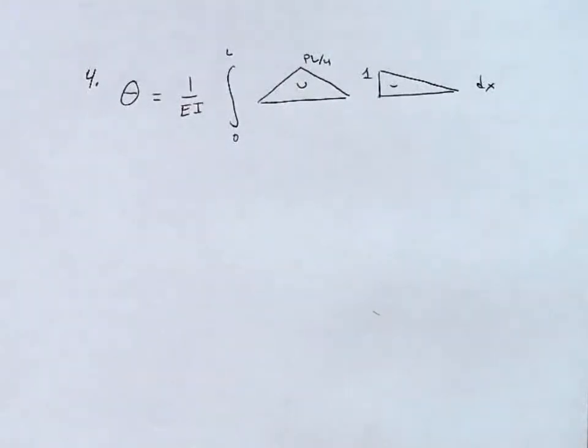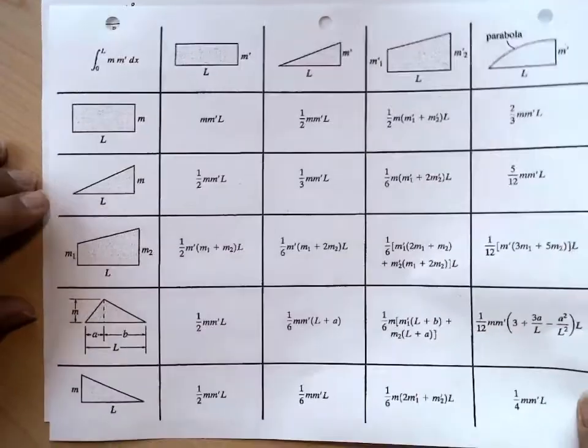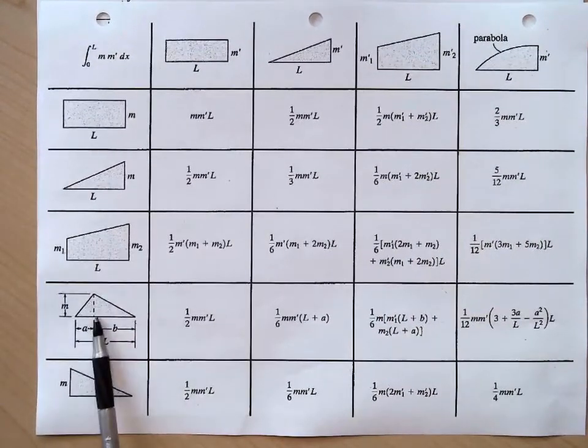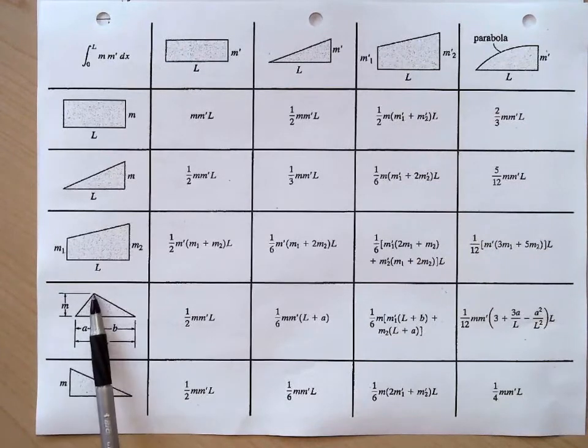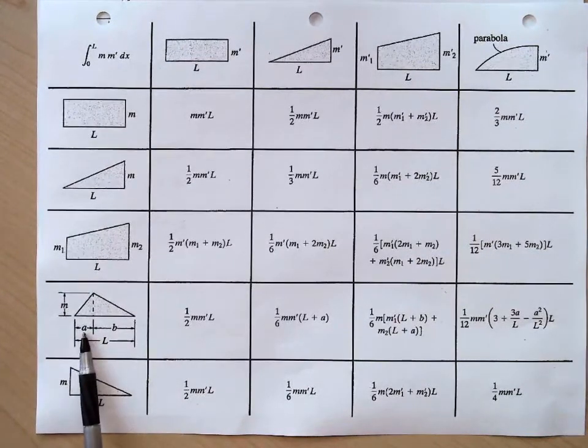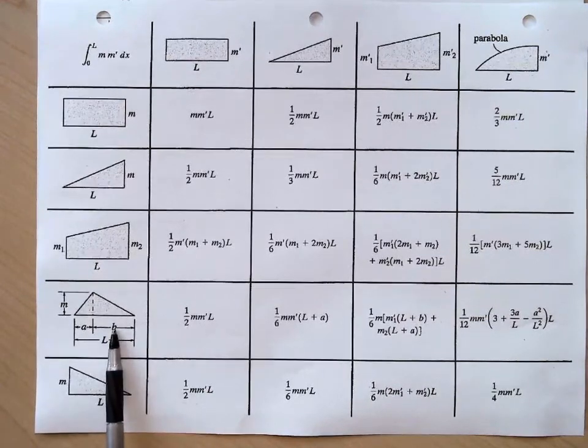So how do we do this? Well, this is where I'll bring out my trusty little integration table. Let's see what we have here. I have a triangle here with the point in the middle somewhere in the middle. It doesn't necessarily have to be equal, but in our case, A is equal to B is equal to L over 2.